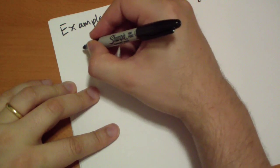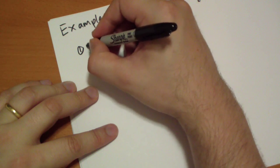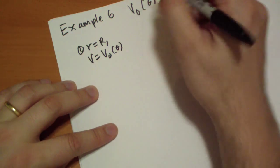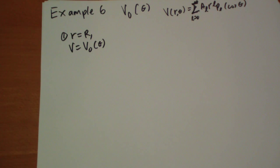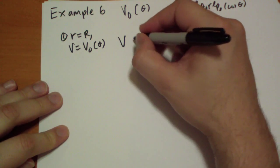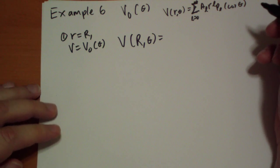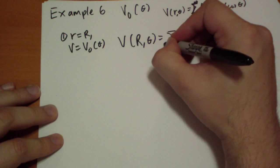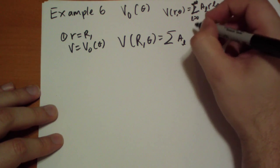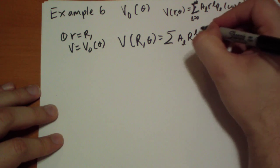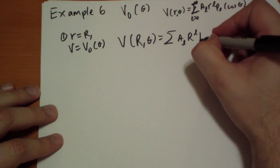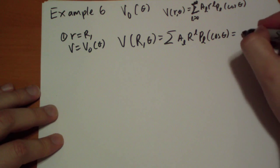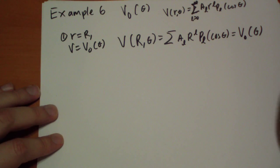At r equals R, the boundary conditions: at r equals R, the potential has to equal v_0 of theta obviously. So v of capital R theta, at the sphere, it's going to equal the sum of a_l capital R to the l, because that's the radius that we're at, the Legendre polynomial cos theta. That's going to have to equal the function we're given.